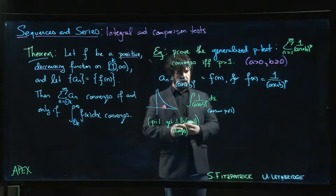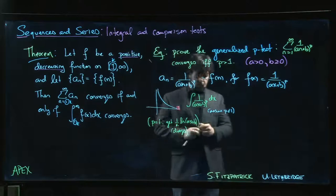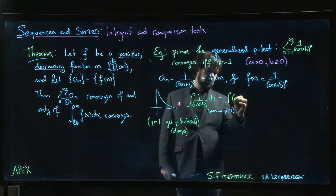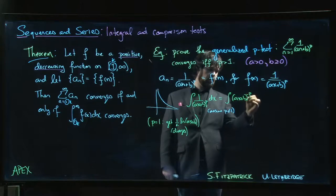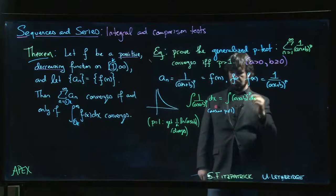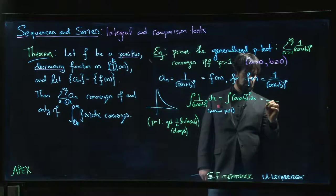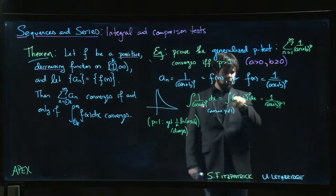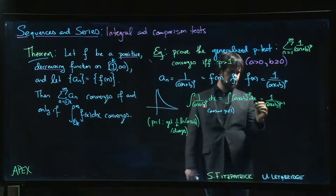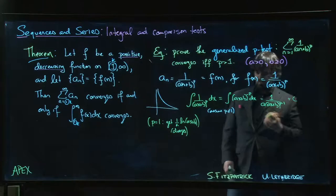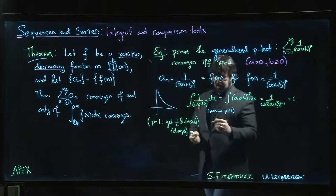So we're going to assume that p is not equal to one. If p is not equal to one, then this is just power rule and chain rule. This is the integral of (ax + b) to the minus p. We add one to the exponent, so we get minus p plus one, or one minus p. We drop that into the denominator: (ax + b) to the (p - 1), one over that. But we also have to divide by a—there's a 1 over a coming from the chain rule. So there's an a out there, plus your c if you like.